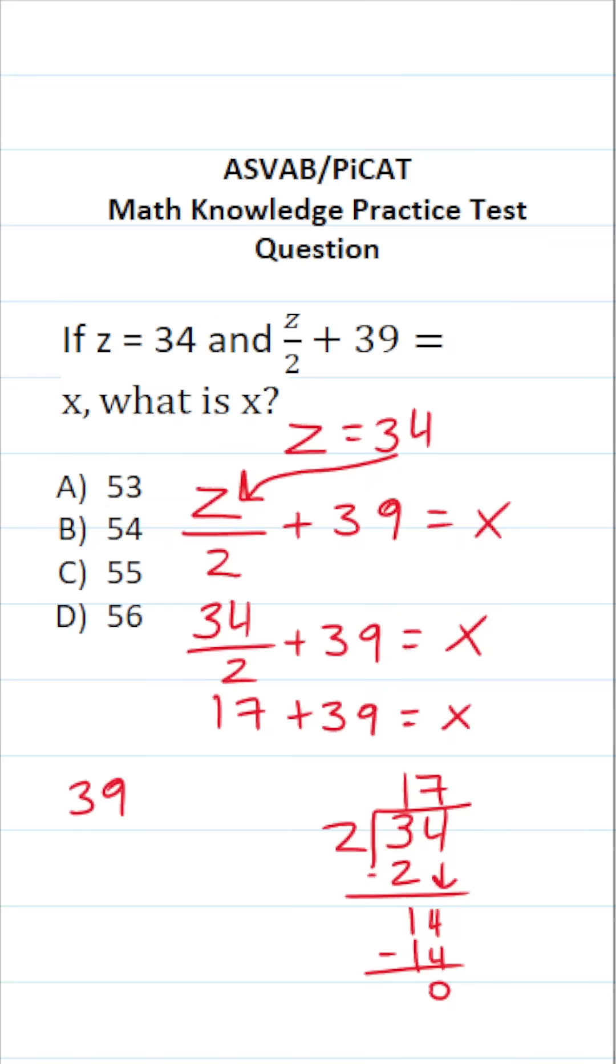9 plus 7 is 16. So bring down a 6, carry a 1. 3 plus 1 is 4, plus 1 is 5. So this becomes 56 equals x.